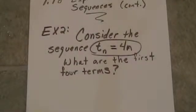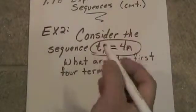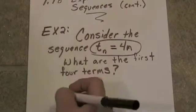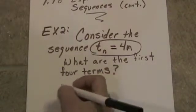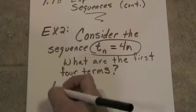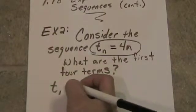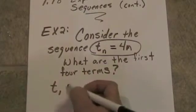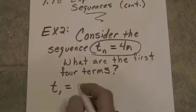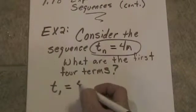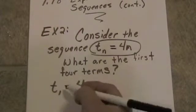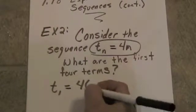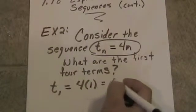All we have to do is send an argument. We need to find out what term we're on, and that is the n. Using subscript notation, t sub 1 is equal to 4 times our n, which is 1. This is the first term, so it would be 4 times 1, which is 4.